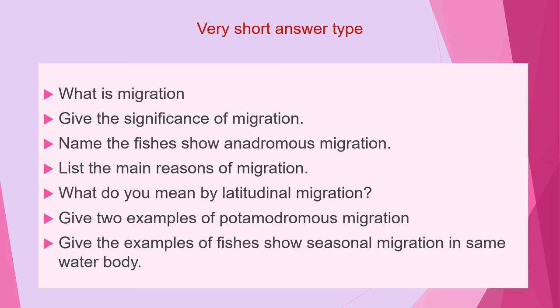Third question is: name the fishes that show anadromous migration. Next question is: list the main reasons for migration. Next is: what do you mean by latitudinal migration? Next is: give two examples of potamodromous migration.